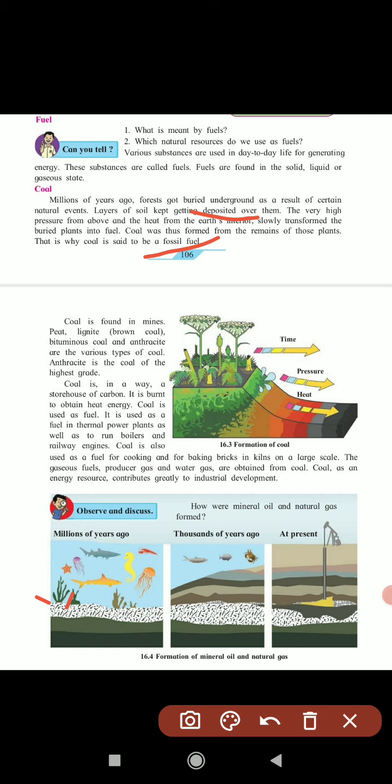Coal is found in mines. Here they have shown how these dead plants got buried underground. Due to high pressure and heat, it got transferred into coal. Coal is found in mines as peat, lignite, bituminous coal, and anthracite coal.